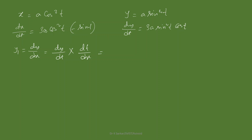Computing y₁: the 3a terms cancel and sin t·cos t cancel, leaving y₁ = -sin t / cos t = -tan t. Next, y₂ = d²y/dx² = d/dx(dy/dx). Since dy/dx = -tan t and the derivative is with respect to x, we change the variable.